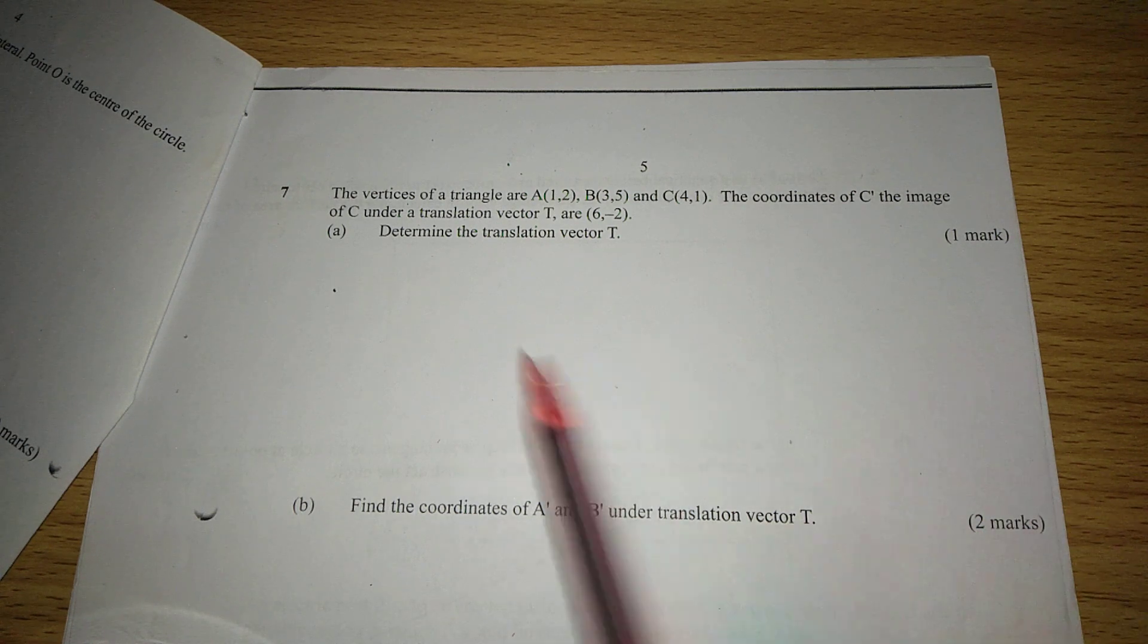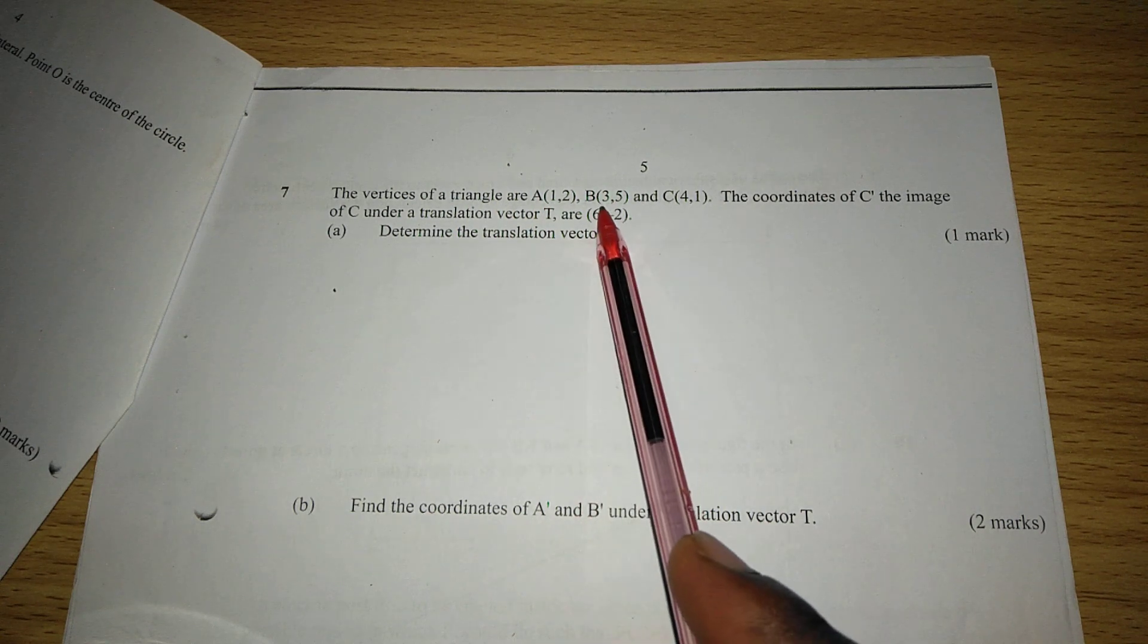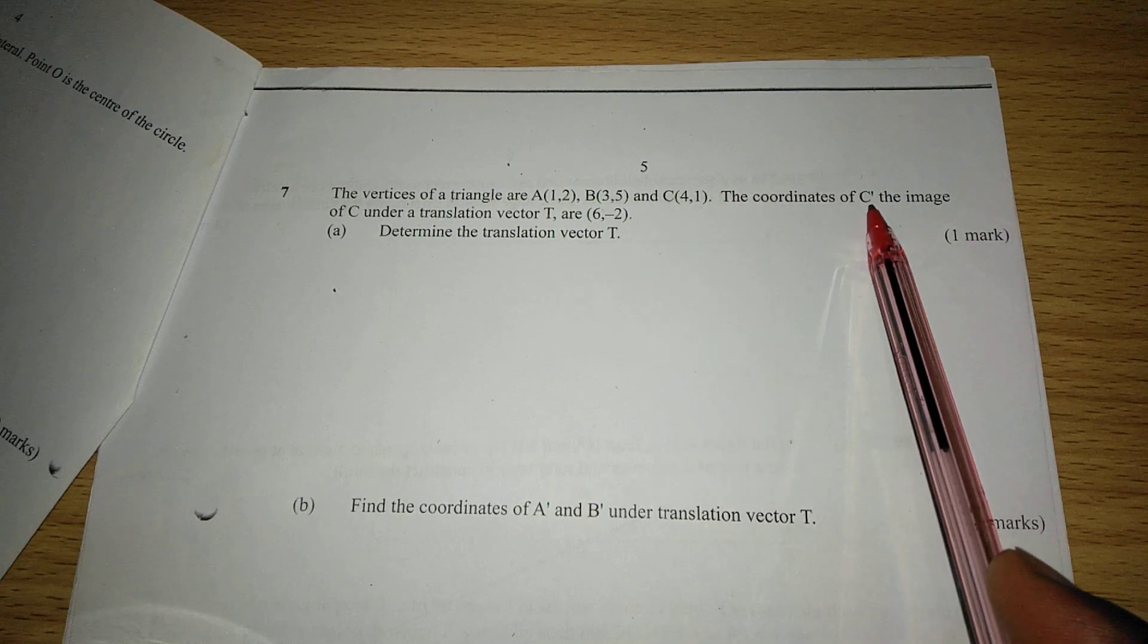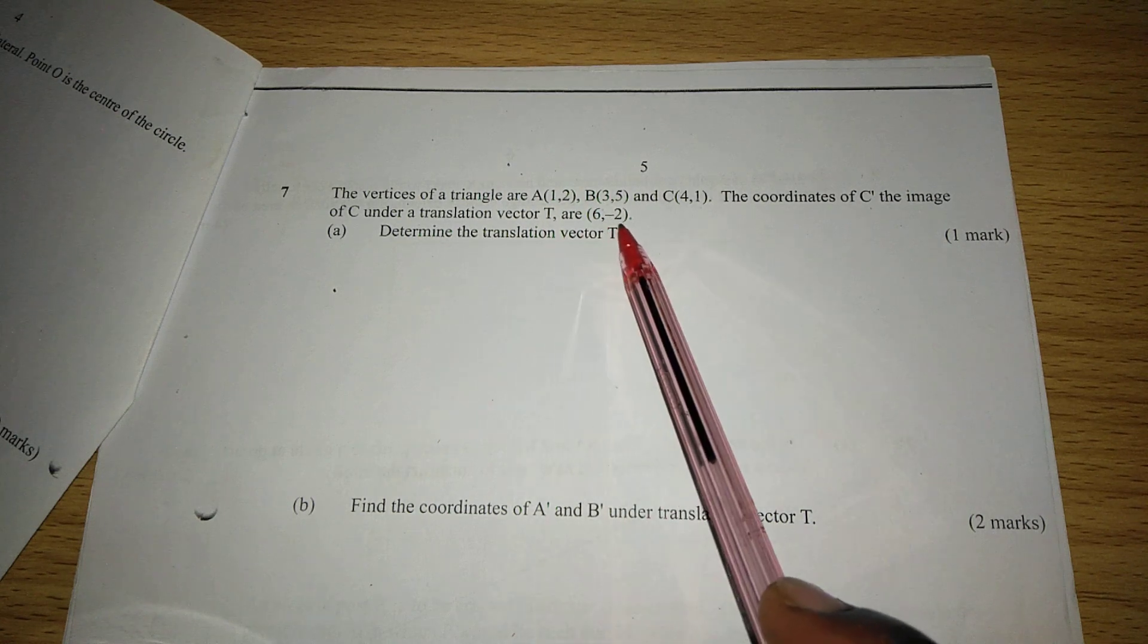So we are told that the vertices of a triangle are A(1,2), B(3,5), and C(4,1). The coordinates of C', the image of C under translation vector T, are (6,-1). Determine the translation vector T.